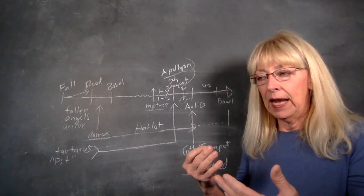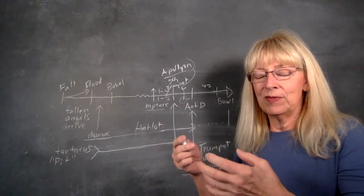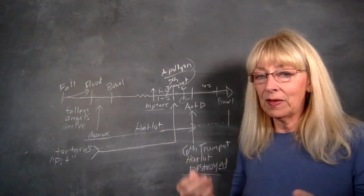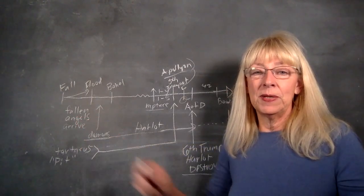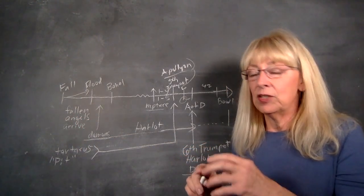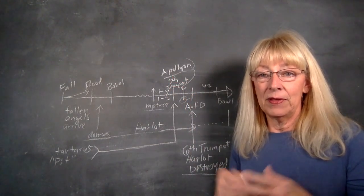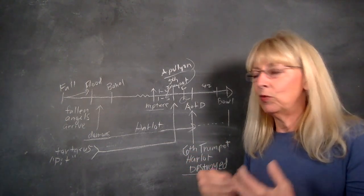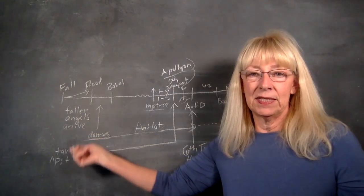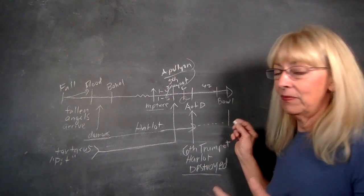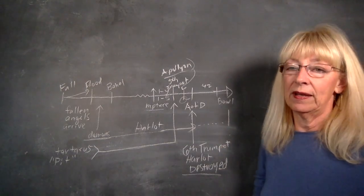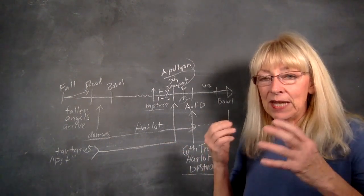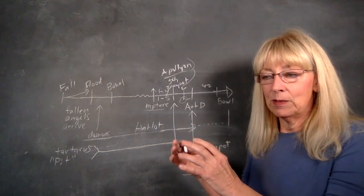When the False Prophet comes on the scene and asks the earth dwellers to participate in this creation of the image of the Beast, I believe it's the Watchers who are going to be placed inside of people, just like Apollyon is placed inside of the Antichrist, who is a man. There are going to be people who are made into the image of the Beast who will have these fallen spirits placed inside of them, and they're going to be thrown into the lake of fire when Christ returns, plus anyone who took the mark.